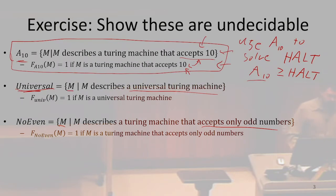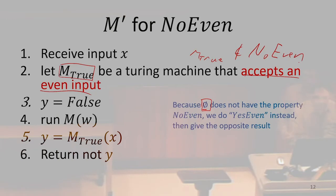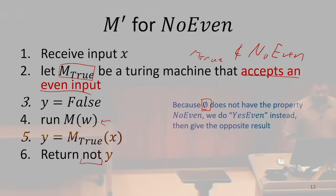We're still going to use the same idea. We consider M_true to be a Turing machine that does accept some even input — that is, M_true does not belong to 'no even.' We set things up so that M' matches M_true exactly when M halts on w. When M' receives input x, the first thing we do is run M on w. If M on w halts, then we run M_true and return the opposite of that result.